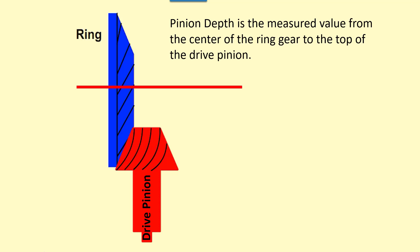Draw a line through the center of the ring gear. Draw a second line across the top of the drive pinion gear. Measure the distance between the two. This is known as pinion depth measured value.